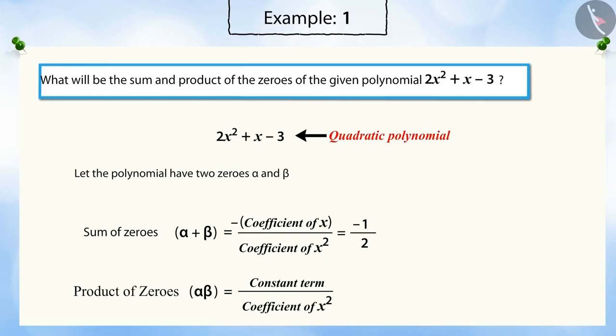Similarly, we know that the product of the zeros of the quadratic polynomial is the ratio of the constant term of the quadratic polynomial to the coefficient of x squared. Substituting the values of the constant term and coefficients of x squared gives the product of the zeros as minus 3 by 2.